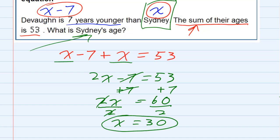So Sydney is 30. If we were asked for Devon's age, I would have to subtract 7 and Devon is 23. So Sydney 30 plus Devon 23 equals our 53.